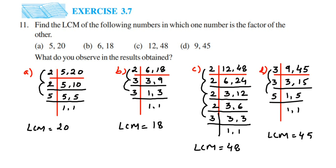Now we have got the LCM of all four questions. Let us read the question once again — find the LCM in which one number is a factor of the other. You can see 5 is a factor of 20, and 6 is a factor of 18, 12 is a factor of 48, and 9 is a factor of 45 — because 45 goes in the 9 times table. Factors are the numbers by which a given number is completely divisible. In each given set, one number is a factor of the other.